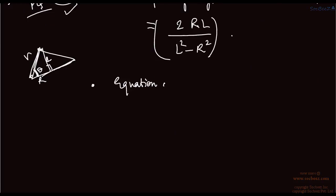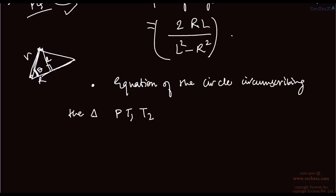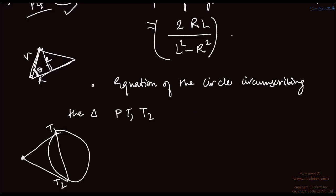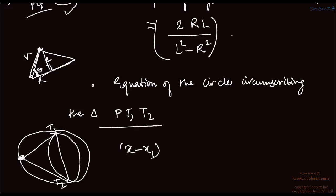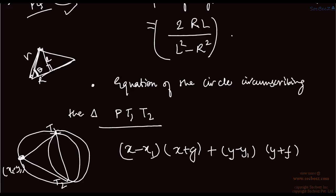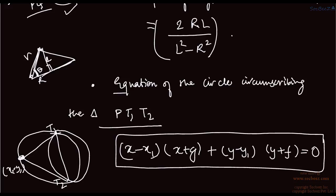The equation of the circle circumscribing the triangle formed by P, T1, T2 — where P is the external point and T1, T2 are the points of contact — is given by (x minus x1)(x plus g) plus (y minus y1)(y plus f) equals 0, where x1, y1 are the coordinates of point P. This is the equation of the circle circumscribing this triangle.